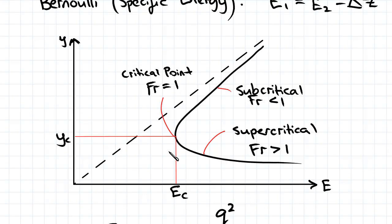So since the flow is critical we know that the height of the flow over the weir is equal to Yc.